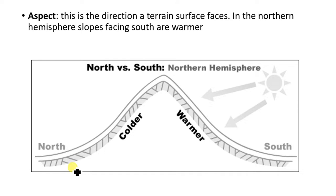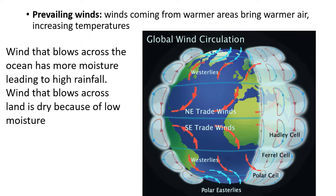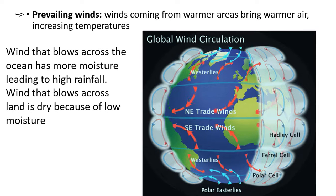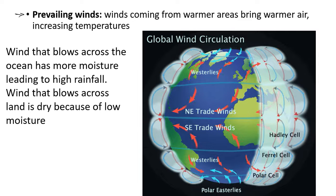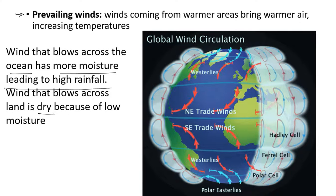Next is aspect — the direction a terrain faces. In the Northern Hemisphere, areas facing south tend to receive more sunlight and high temperature, while areas facing north usually have low temperature. For prevailing wind: wind coming from warmer areas brings warm air, increasing temperature, while wind from cold areas does not. Wind that blows across the ocean has more moisture, leading to high rainfall, but wind that blows across dry land has low moisture, therefore no rainfall.